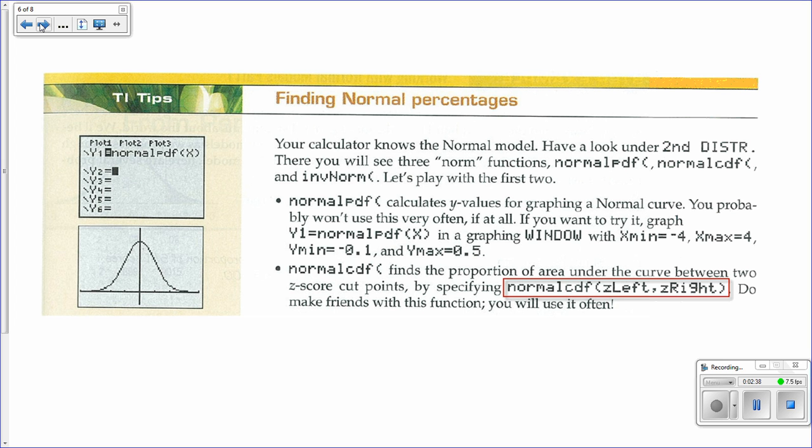Make sure you pay attention to this TI tip. It gives you the way, on the calculator, to find out how likely it is that something would fall within two Z scores.